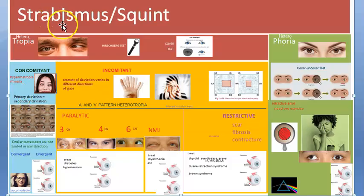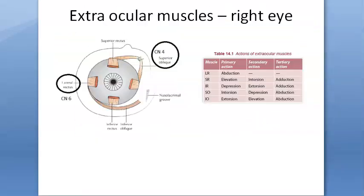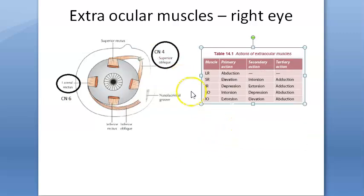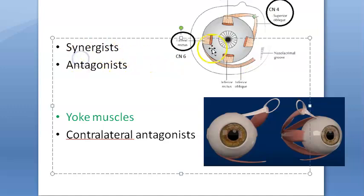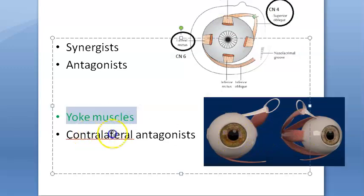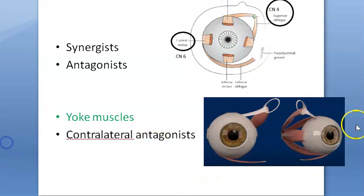Hello everyone. In the previous video we started off with strabismus or squint, then we saw terminologies, extraocular muscles, which directions they move the eyeball, innervation nerves, and we saw that muscles can be synergists or antagonists in a single eye. When comparing both eyes there are yoke muscles and contralateral antagonists.